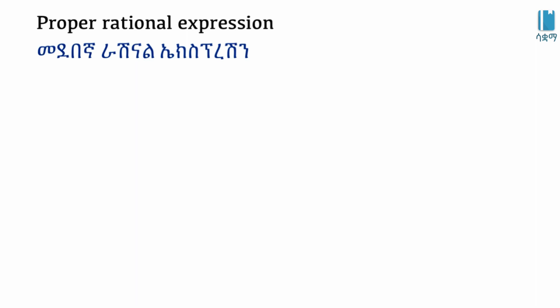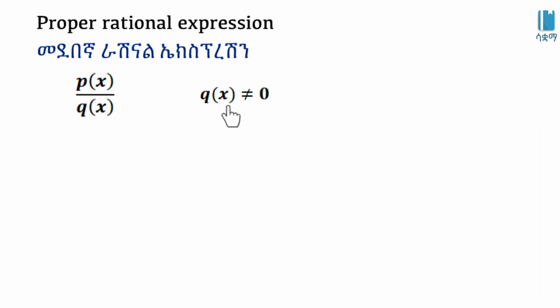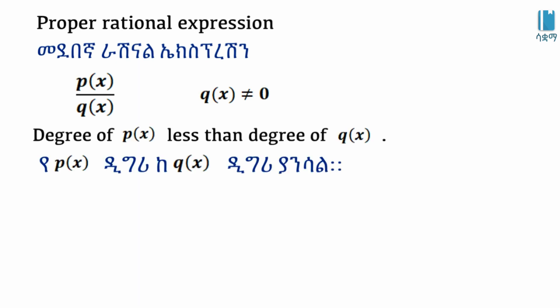In the example, the proper rational expression is defined. The rational expression is a polynomial over polynomial — P(x) over Q(x) — where Q(x) is not equal to 0. The rational expression is called proper when the degree of P(x) is less than the degree of Q(x).